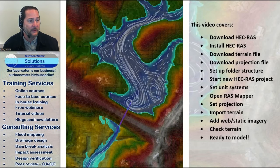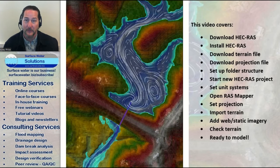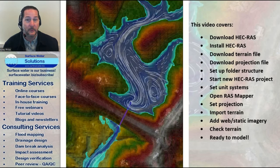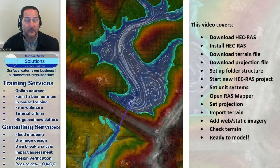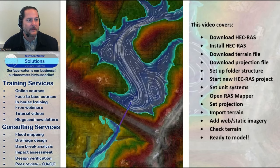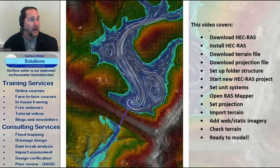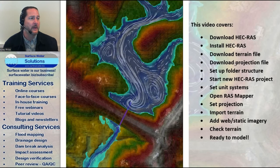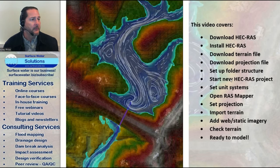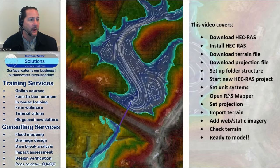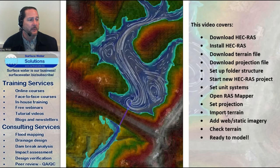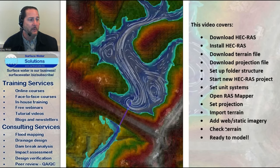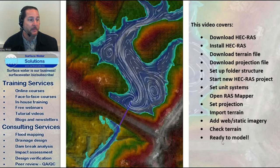In the end, this gets us to the step where we're ready to start our model — whether it's a 1D model, a 2D model, hydraulic structures model, whatever you want to do. These days you'll want HEC-RAS open with RAS Mapper so everything stays geo-referenced. This video will cover: downloading and installing HEC-RAS, grabbing terrain and projection files, setting up a folder structure, starting a new HEC-RAS project, setting unit systems, opening RAS Mapper, setting the projection, importing terrain, and adding web imagery. We'll check everything is good before we're ready to start modeling.